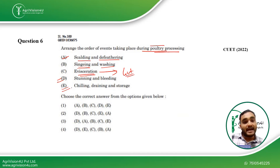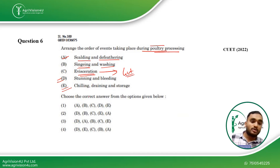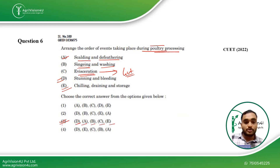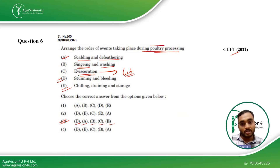Then chilling, draining, and storage of the animal. This gives us the third option as the right answer: D, A, B, C, and E. This question was also asked in CUET 2022.